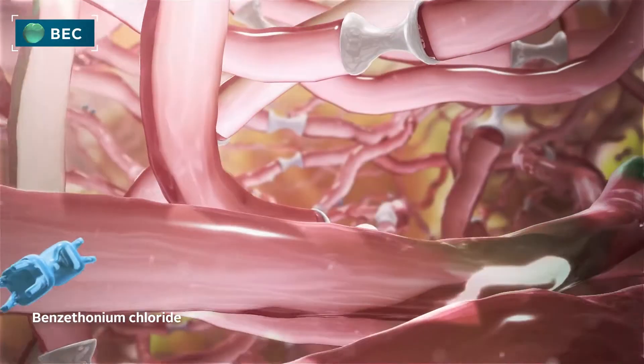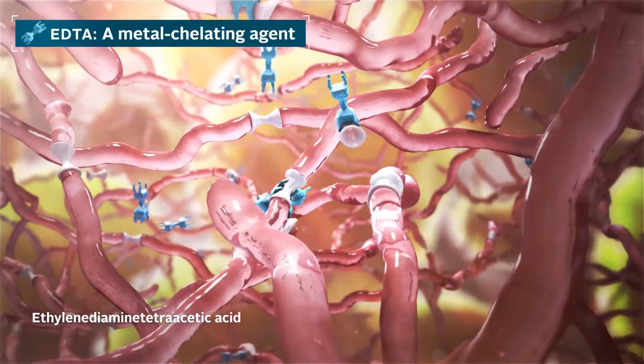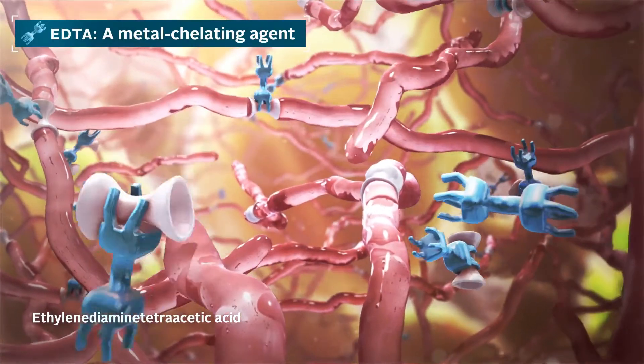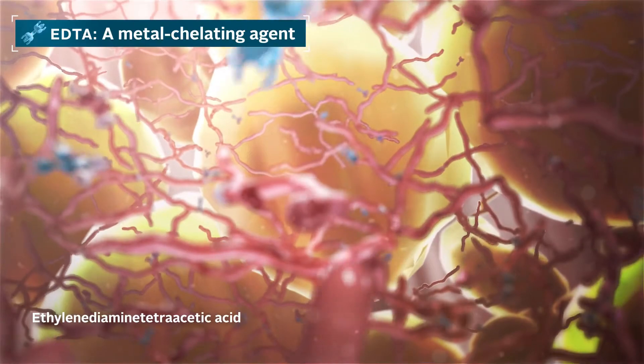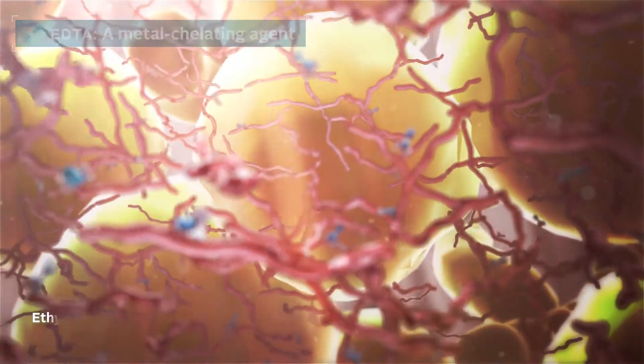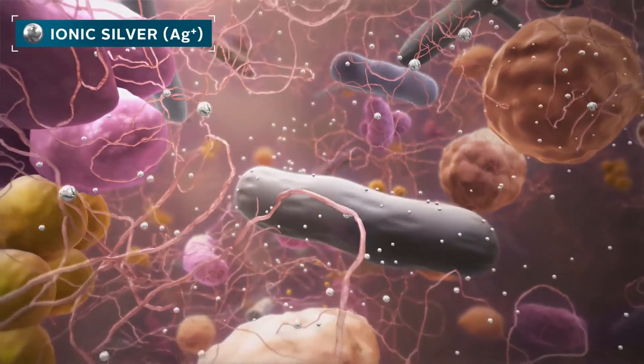EDTA is a metal chelating agent that selectively binds and removes the metal ions that hold the biofilm EPS matrix together, exposing microorganisms within. Now the defenses are lowered, ionic silver can reach and kill the exposed microorganisms.